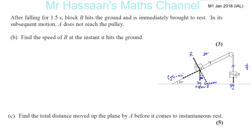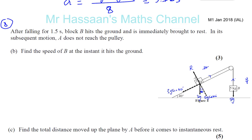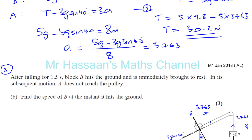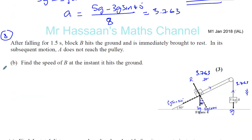M1, January 2018. This is question number 8, continued — we're doing part B, connected particles. We worked out from the previous part of the question that the acceleration was 3.763, and we also worked out that the tension in the string was 30.2 Newtons.